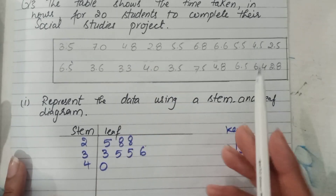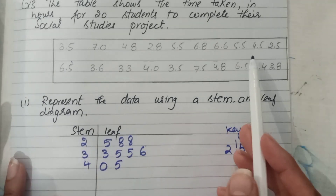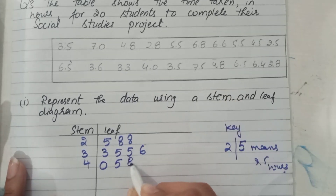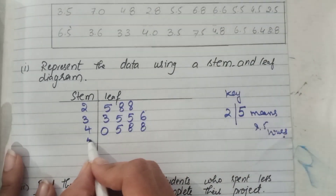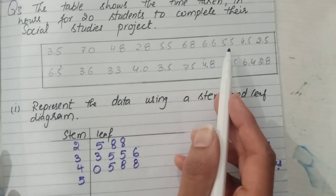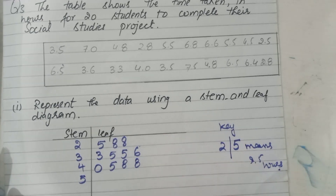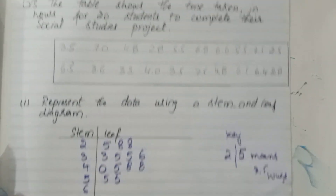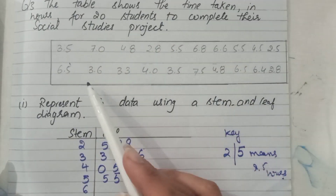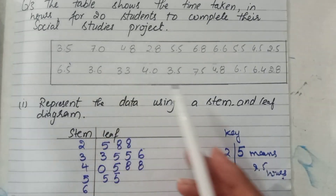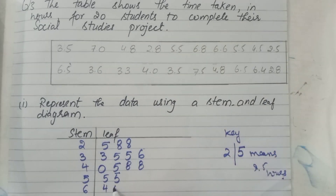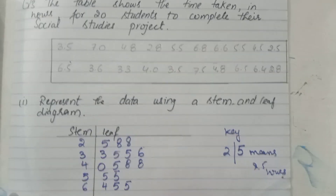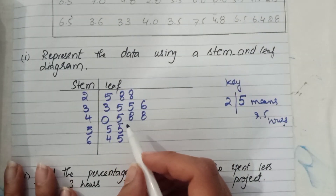Continuing the stem-and-leaf: stem 4 has leaves 0, 5, 8, 8, 8. Stem 5 has leaves 5, 5 — there are two 5.5 values. Stem 6 has leaves 5, 5, 6.